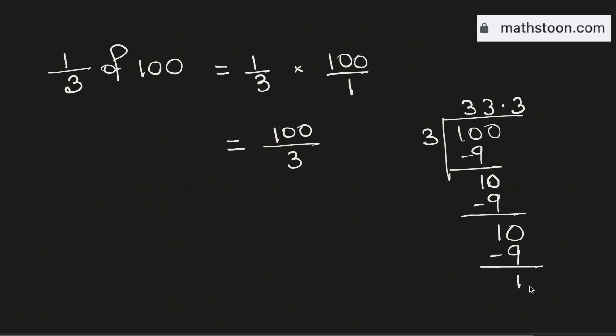As we are always getting 1 here, here we will get 3, 3, 3 and so on. Therefore this is equal to this number which is 33.333 and so on.